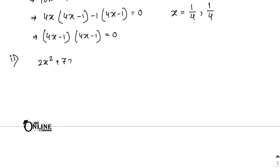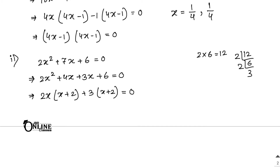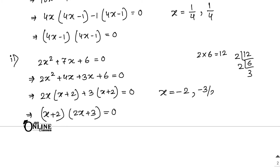Number 2: 2x² + 7x + 6 = 0. Here 2 × 6 = 12. Factorizing 12 gives 6 and 2×3. We need to make 7. Write as 2x² + 4x + 3x + 6 = 0. Taking 2x common gives (x + 2), and 3 common gives (x + 2). So (x + 2)(2x + 3) = 0, giving x = -2 or x = -3/2.